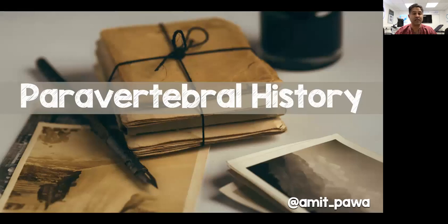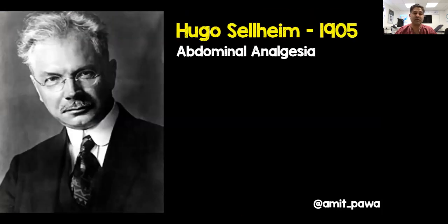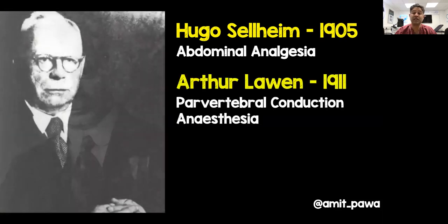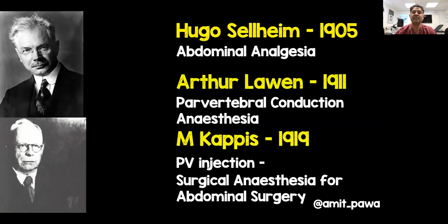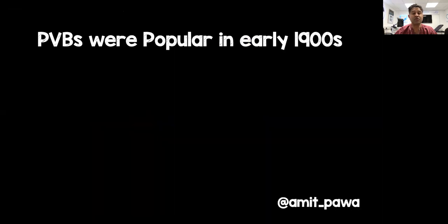Talking about history, let's delve a little into the history of paravertebral blocks. This gentleman is Hugo Selheim, and in 1905 he was probably the first person to describe paravertebral blocks, using them for abdominal analgesia. Arthur Lorne in 1911 talked about paravertebral conduction anaesthesia, and then in 1919, Cappus described the first paravertebral injection used for surgical anaesthesia for abdominal surgery.